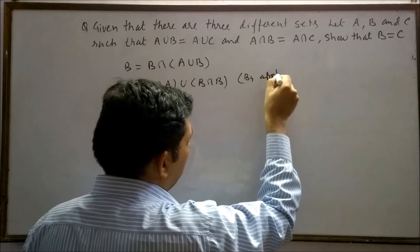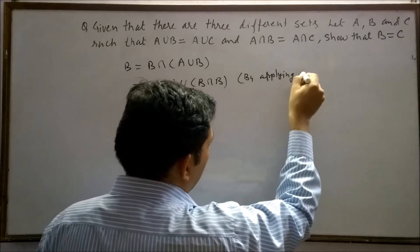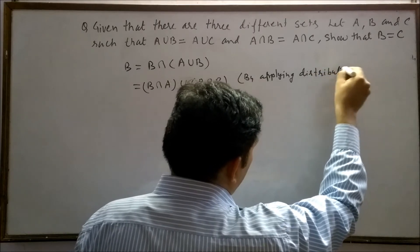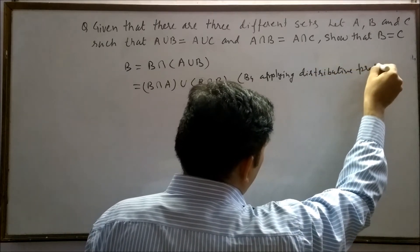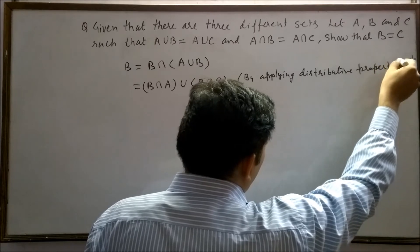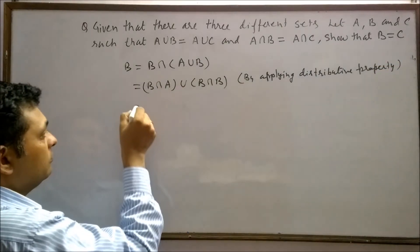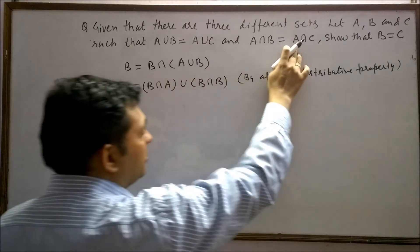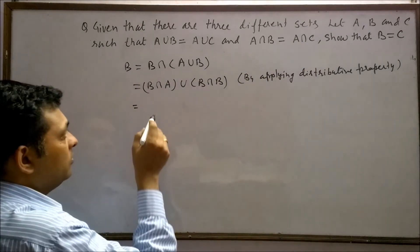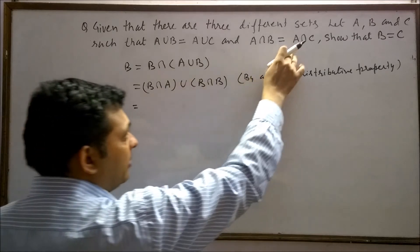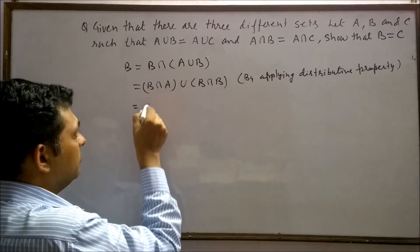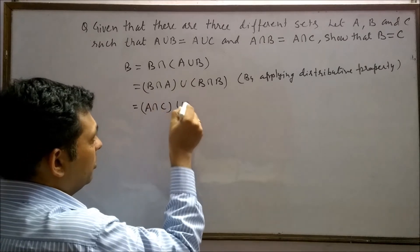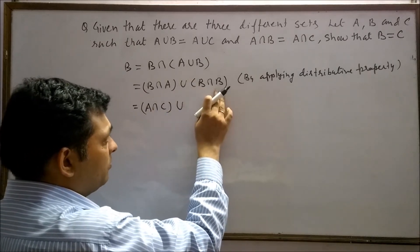By applying the distributive property, B intersection A is equal to A intersection C. So we replace B intersection A by A intersection C. Therefore, A intersection C union B intersection B equals B.